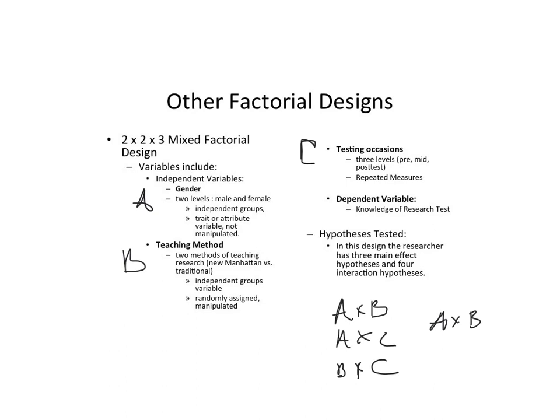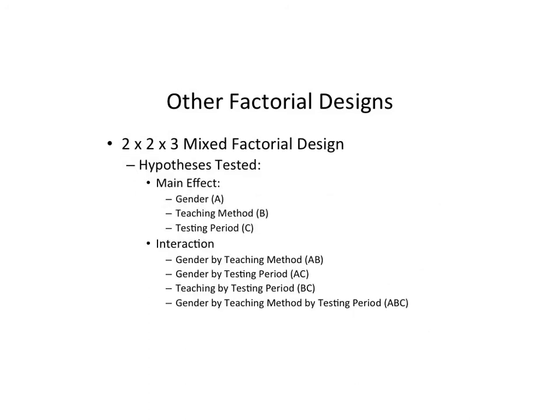We can also look at the A by B by C interaction to get the second-order interaction. This is a list of all potential hypotheses tested in that last example — those main effects, plus the three possible interactions. Hopefully this gives you more insight into where designs can go in terms of complexity, and helps you understand your articles a little bit better.